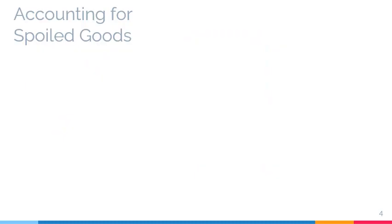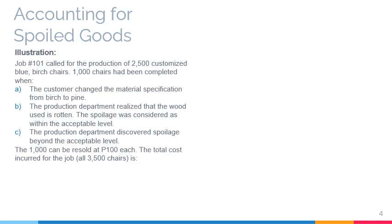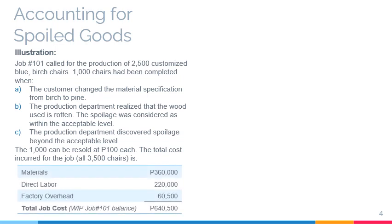Spoilage can occur for various reasons. Let's have a furniture manufacturing company as an example. The company worked on job number 101, which called for the production of 2,500 customized blue-bridge chairs. There are three independent scenarios, and in each of these scenarios, 1,000 chairs have become spoiled. The 1,000 chairs can still be resold at 100 pesos each. All in all, the company produced 3,500 chairs, of which 1,000 were spoiled and 2,500 were delivered to the customer. The total cost for all 3,500 chairs amounted to 640,500 pesos, which was charged to the work in process account for job number 101.